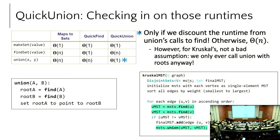Let's take it back to Kruskal's. Here's the pseudocode: we initialize the MST with each vertex as a single-element set. Now that we know what a disjoint set is, which function do we call to accomplish that line? Make set. This means loop over every item and call make set on every item, turning each item into a little set of just itself.